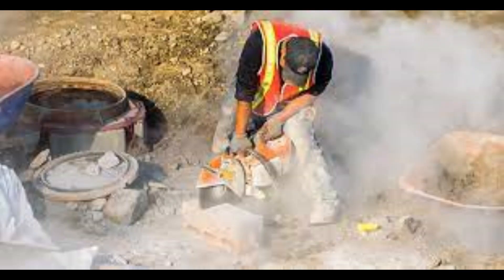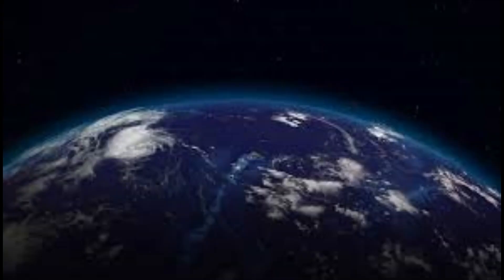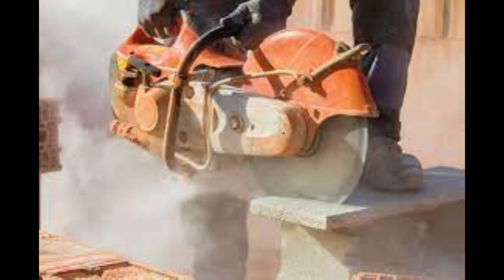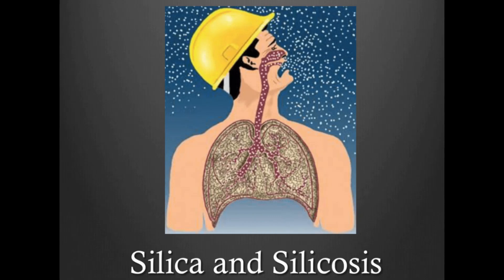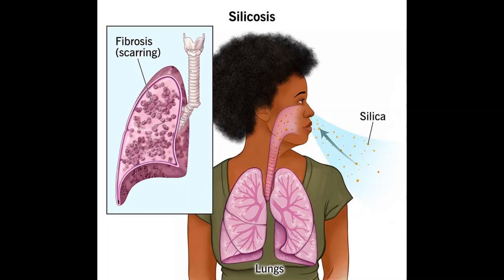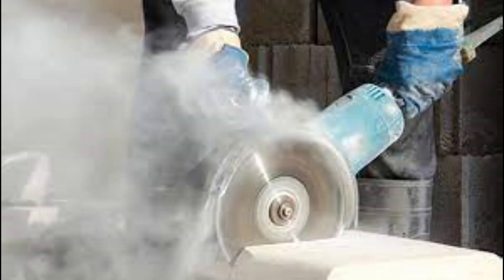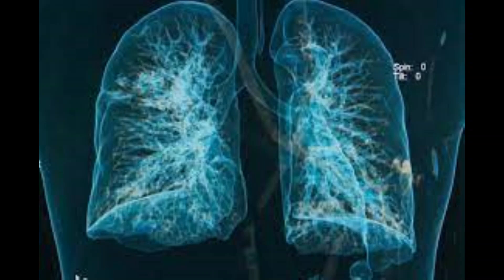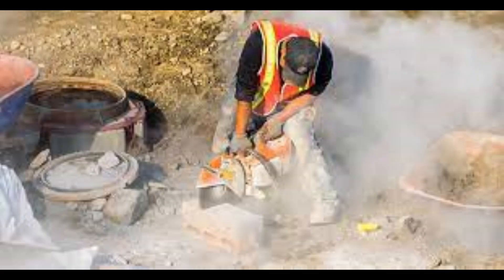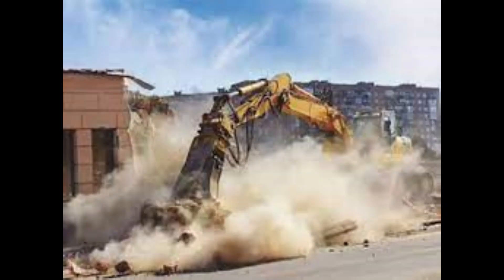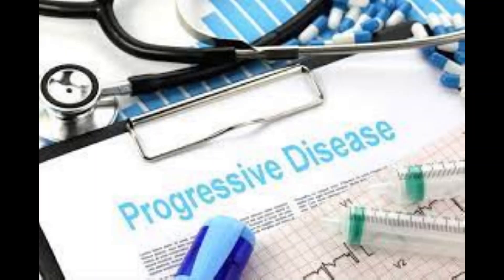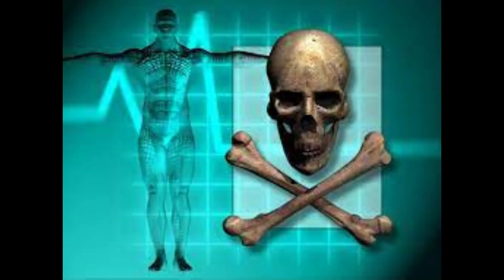It is crystalline silica that causes all of the troubles for workers around the globe. Breathing in dust from silica-containing materials can lead to a health condition known as silicosis. Silica dust particles become trapped within the lung tissue, causing inflammation and scarring. The particles also reduce the lungs' ability to take in oxygen, which is absolutely essential to maintain life. Silicosis is a health condition that develops over time after constant exposure over 10 years or more. However, the disease can occur much more quickly after heavy exposures. Silicosis results in permanent lung damage and is a progressive, debilitating, and sometimes fatal disease.